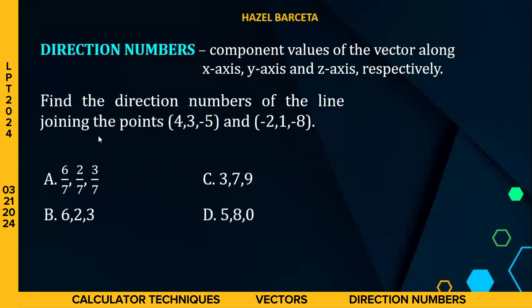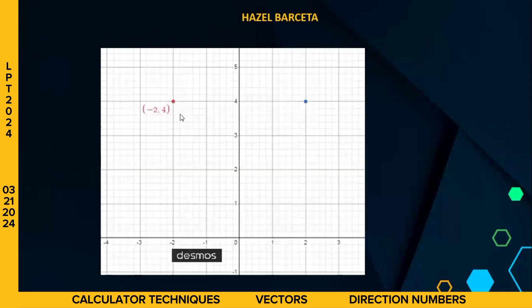But before we solve the problem, magkaroon po muna tayo ng introduction. So here we have a point, negative 2, 4 in red, and we will call this point A. We also have point in blue, and we will call this vector A. By the way, although we have x, y, and z components sa ating problem, ang example po natin ay 2D lang.